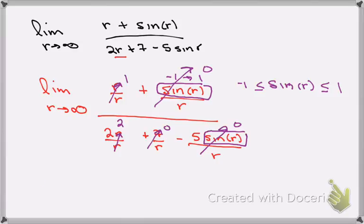If I look at what I have left, I've got the limit as r goes to infinity of 1 plus 0 in the numerator, divided by 2 plus 0 minus 0 in the denominator. So that limit is going to be equal to 1 half.